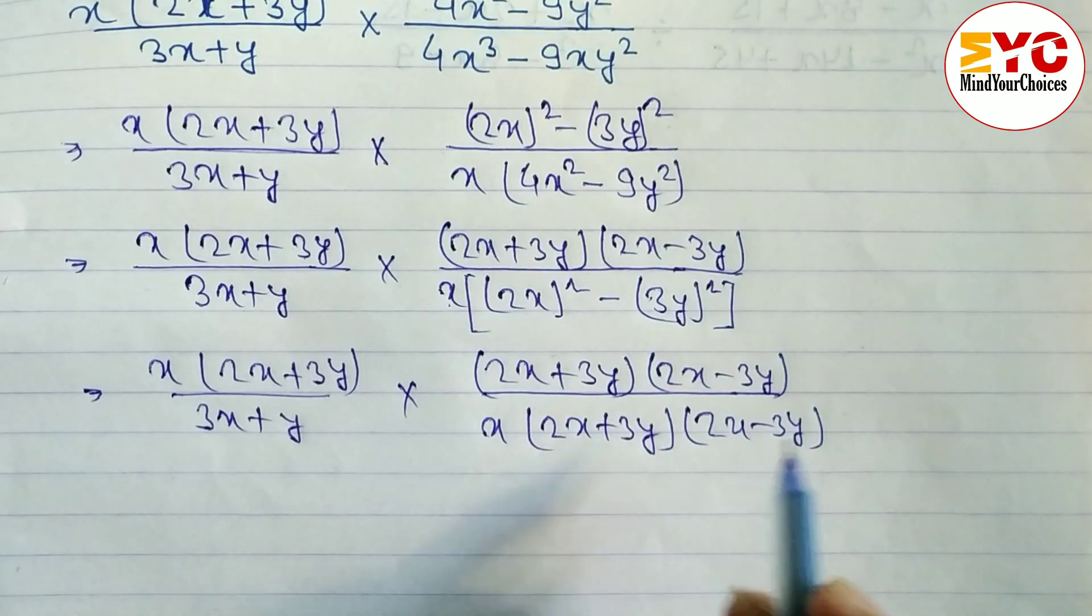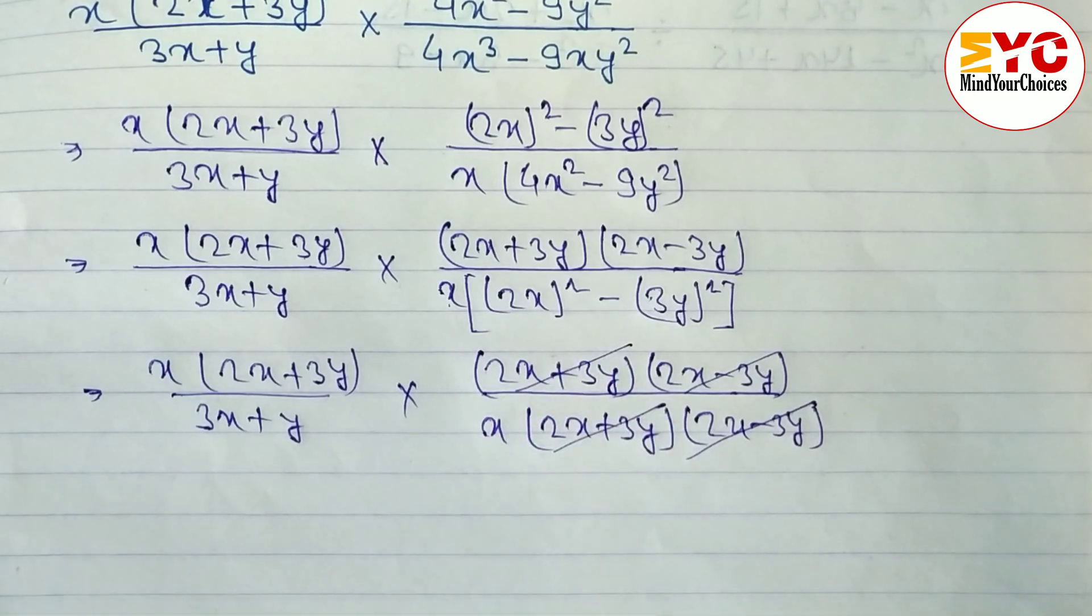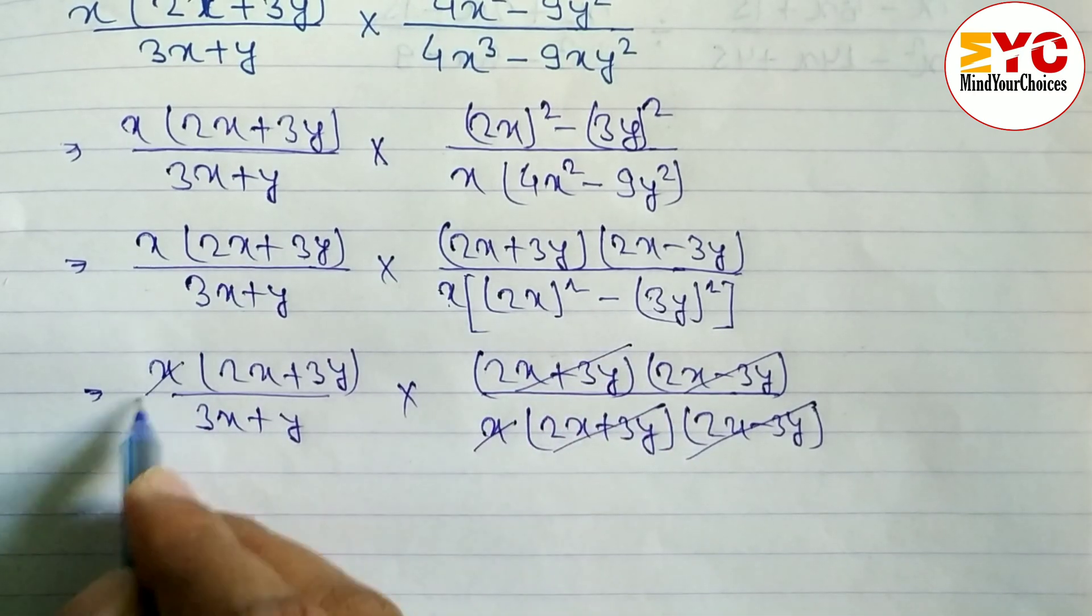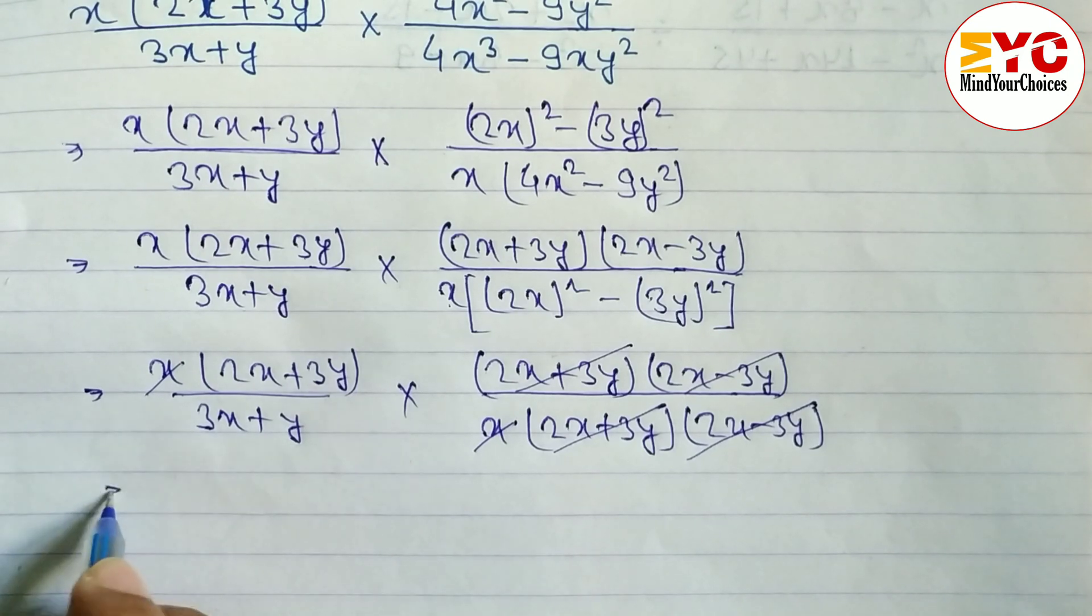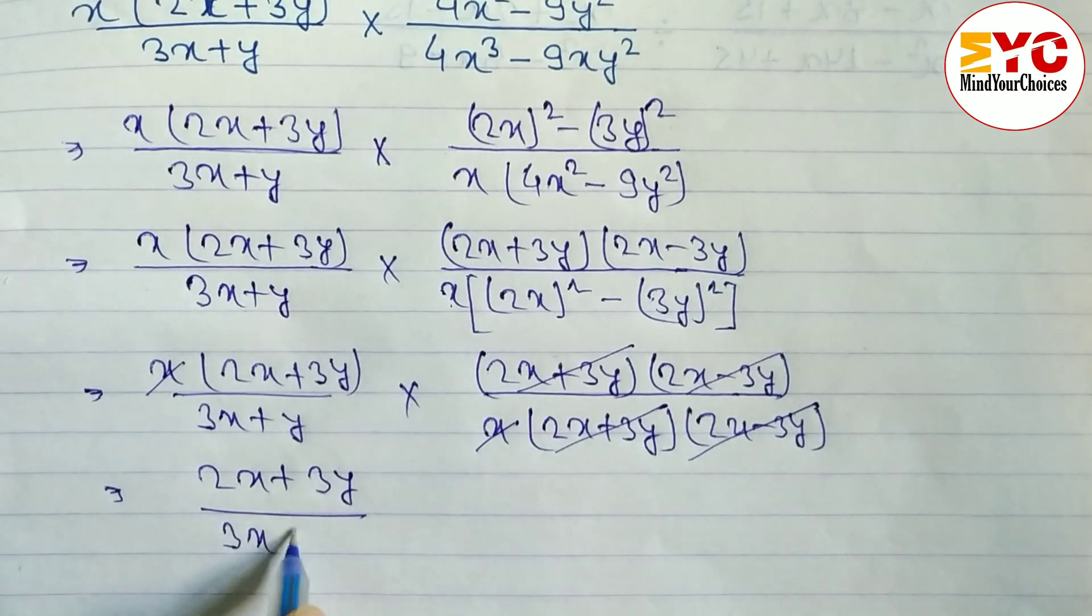And after this we can see here 2x minus 3y, 2x minus 3y cancel. 2x plus 3y and this also cancel. Here we can, x and x also we can cancel.